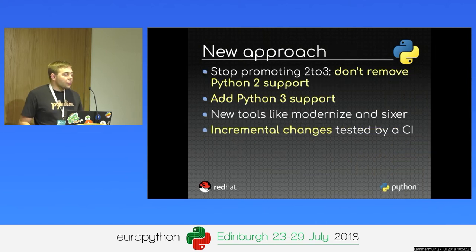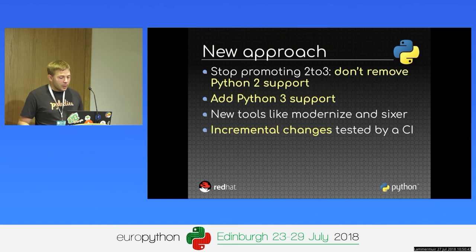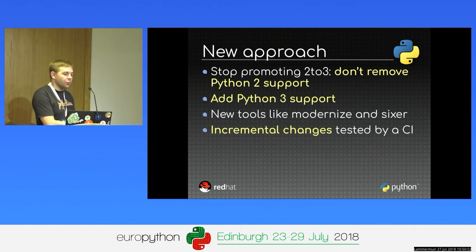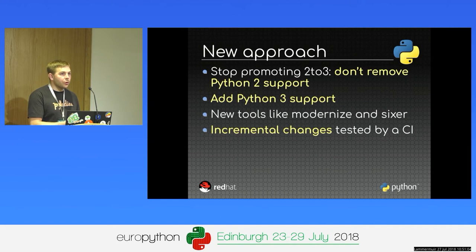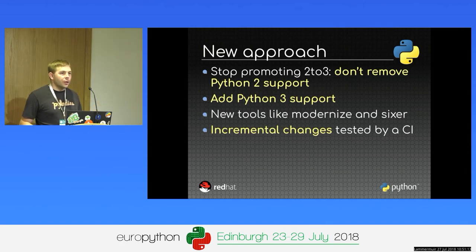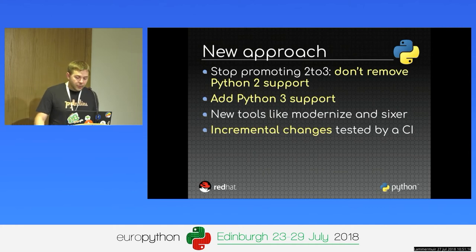To port an application to Python 3, we saw that 2to3 was not the best approach. Instead of removing Python 2 support, the idea became: add Python 3 support. This is a big change — you don't lose your users, you move to Python 3 step by step without forcing all your dependencies and codebase at once. You can start with a single file and do it incrementally. New tools like Modernize emerged to convert your codebase without losing Python 2 support.